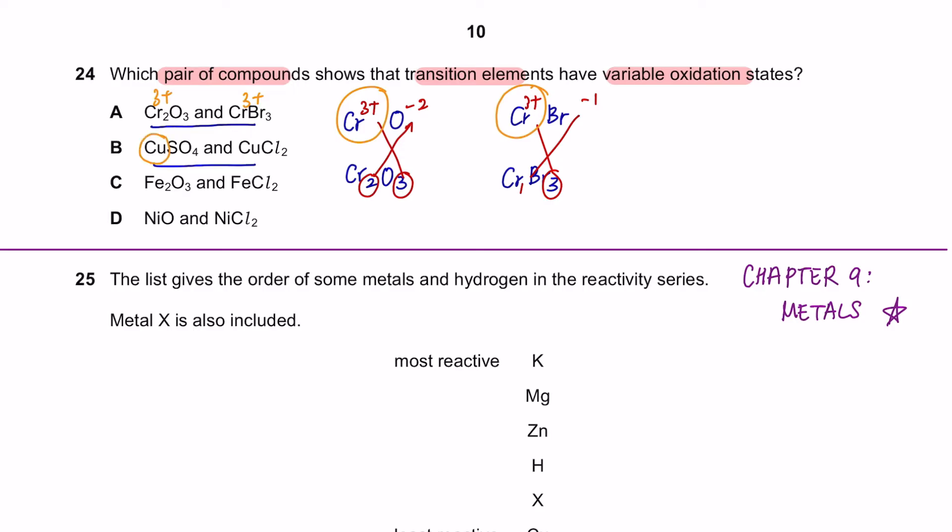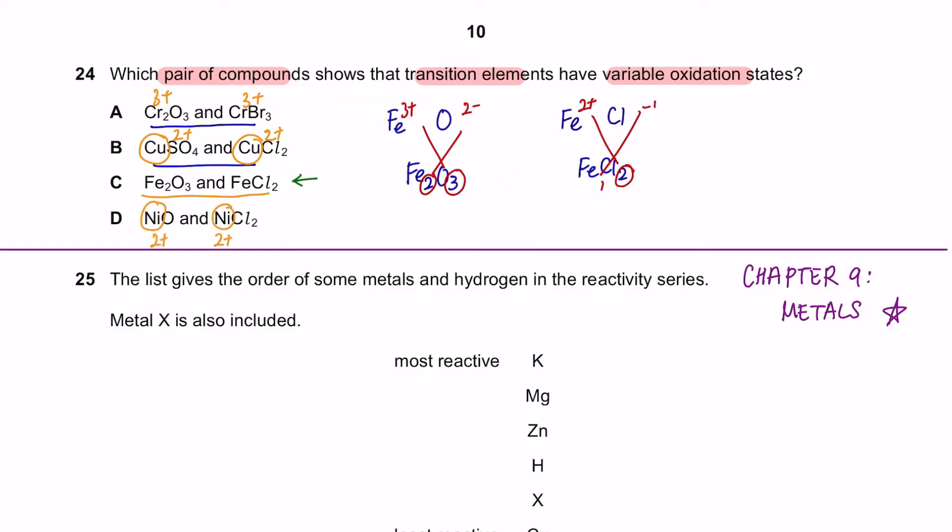The transition element here is chromium and both of them have the oxidation number of 3+. We'll repeat the same step and the transition element copper, both of them will get 2+. Except for option C, the iron is a transition element. One has the oxidation number of 3+, and the other 2+, so the answer is C.